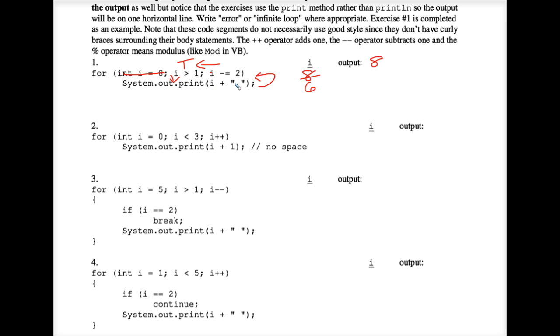We're at system out print I plus space. I is currently 6. We're concatenating a space to it, so that's what we get because of the print and not print LN. We loop back up to the top. I goes down to 4. We move in from the right. That's still true, so we print I.